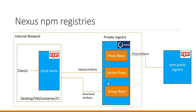The clients will use the group repository for downloading the artifacts, and they will use the hosted repository for uploading the corresponding packages. Now in this demo, let us see how we can create the proxy repository, hosted repository, and group repository for NPM packages. Let us start.